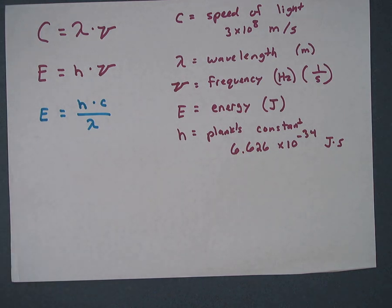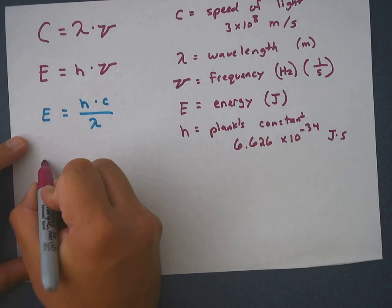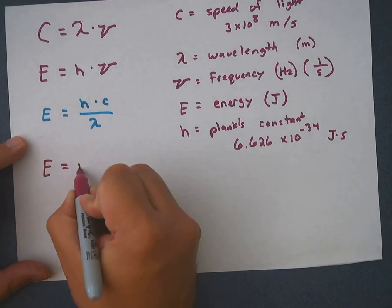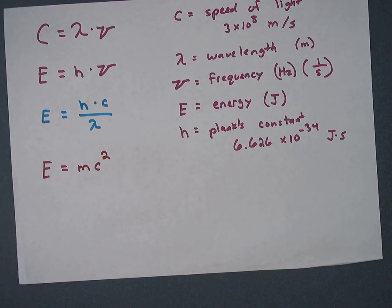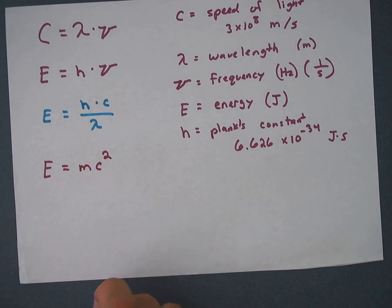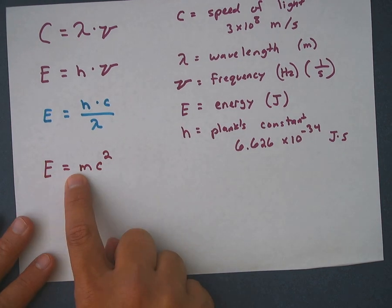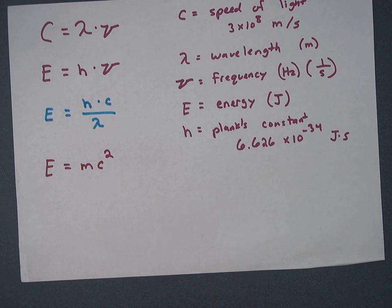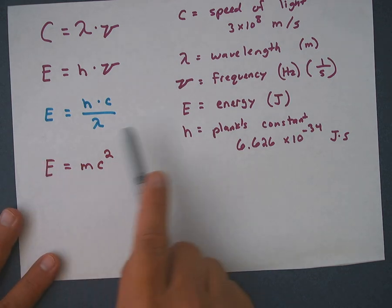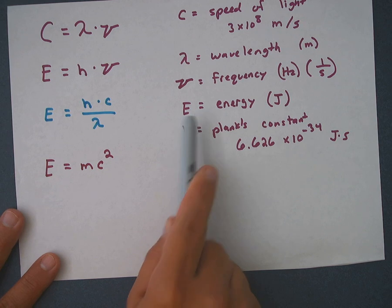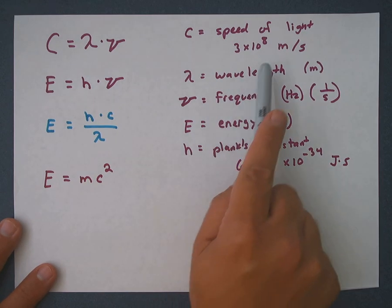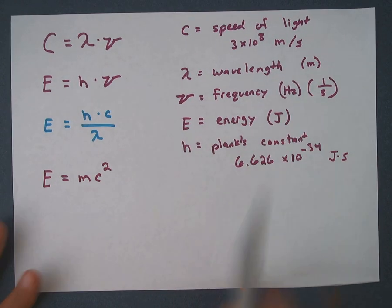The next formula that we're going to have is Einstein's famous equation, E equals mc². When I was in elementary school, I wrote that on my science folder because I'm like, I'm smart. I know E equals mc². But I didn't know what E or M or C stood for, nor what squared meant. Now we'll just cover that real quick. E stands for energy, still in joules. C is still the speed of light, 300 million meters per second. That's a constant. And M is mass.